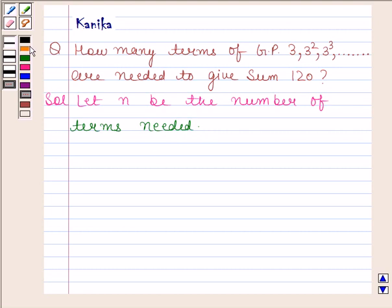Given GP is 3, 3 squared, 3 cubed and so on. Now, here the first term that is A is equal to 3 and the common ratio that is R is also equal to 3.